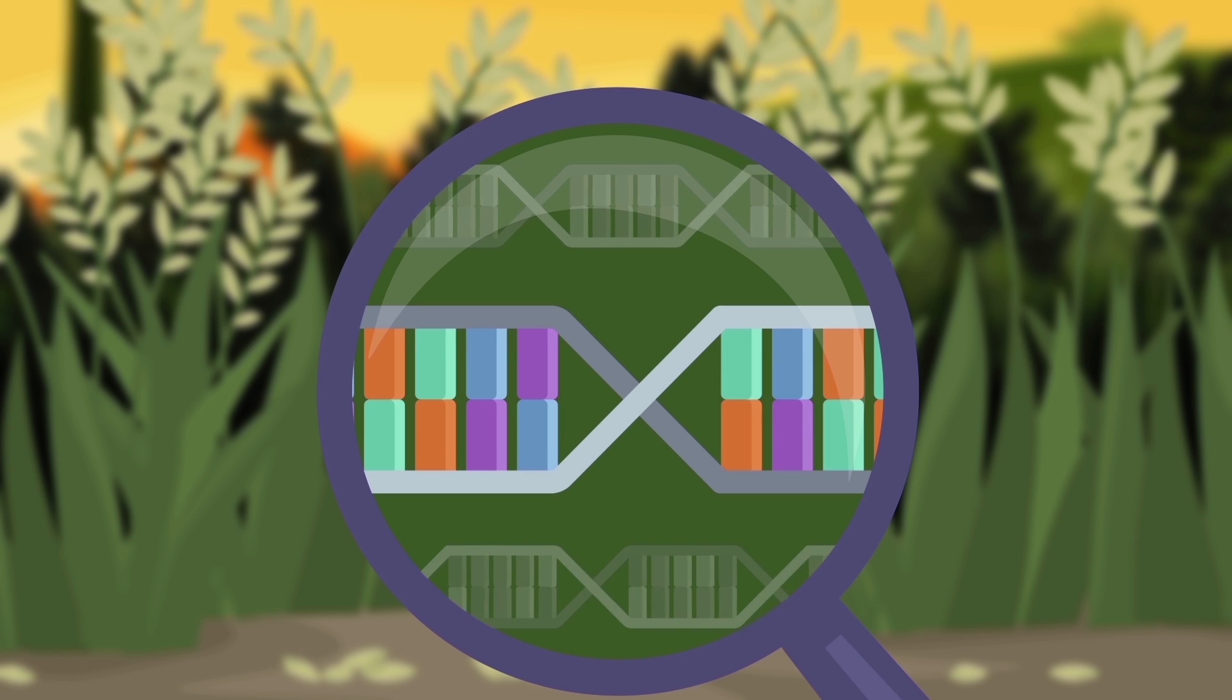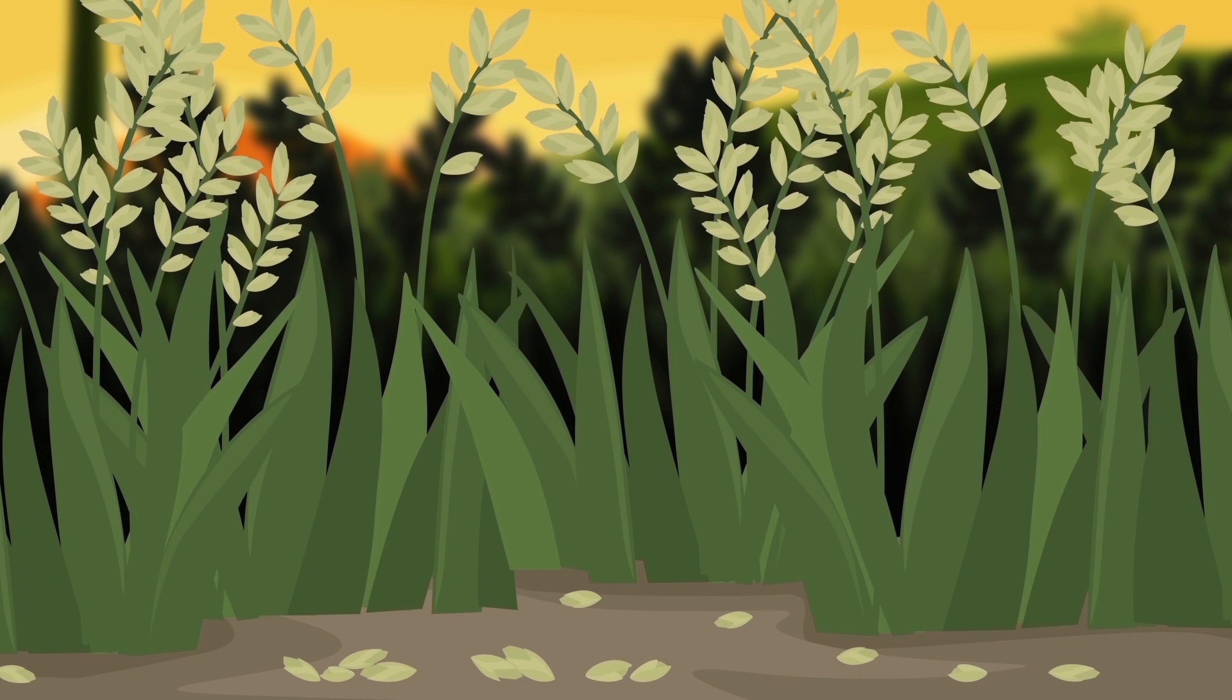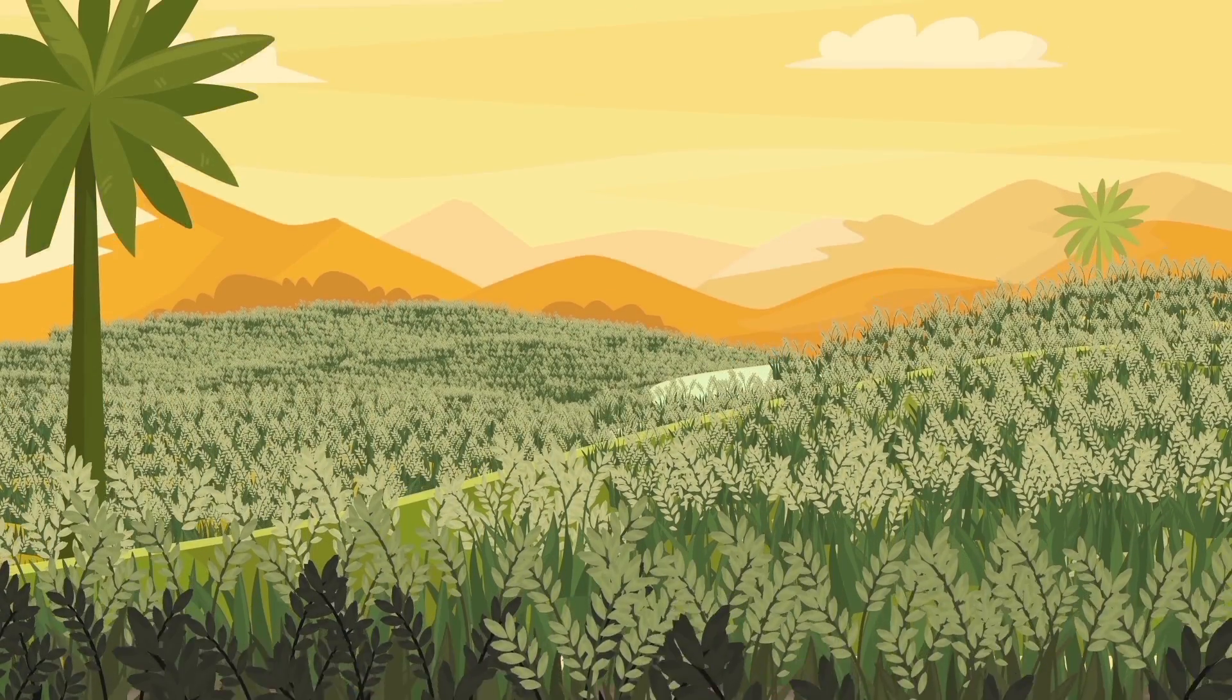As a result of the mutation, the functionality of the seed-shattering gene in wild rice was disrupted, and the rice acquired the necessary properties to stop falling.